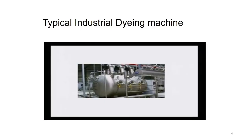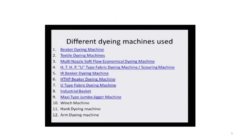A typical industrial dyeing machine looks like a closed cylindrical vessel — very big — so it can accommodate a good amount of fabric. Yards and yards of fabric can be accommodated in this dyeing machine. Different types of dyeing machines are used not only in natural dyeing but also in synthetic dyeing: beaker dyeing machine, textile dyeing machines, multi-nozzle soft flow economical dyeing machine, HTHP U-type fabric dyeing machine, scouring machine. We will now look at these in deeper detail for better understanding.